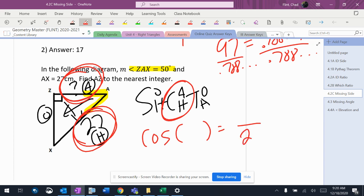The 27 is the hypotenuse, it goes on the bottom. The 50 is the angle, so it goes in there. I don't know the adjacent.